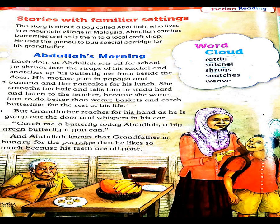He uses the money to buy special porridge for his grandfather. Porridge ka matlab hota hai dalia — ye ek soft food hota hai jo buzurg log, jo apne daanton se sahi se chaba nahi paate, aram se kha sakte hain. Abdullah apne paise grandfather ke liye porridge kharidne mein kharch karta tha.